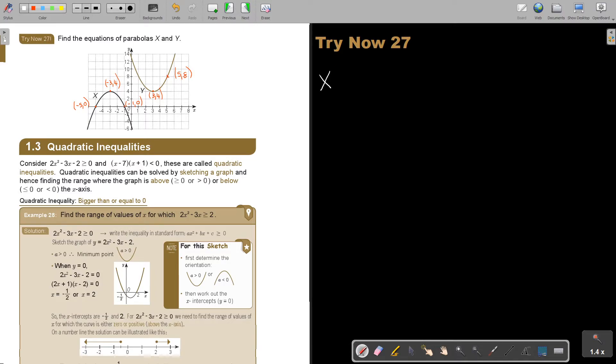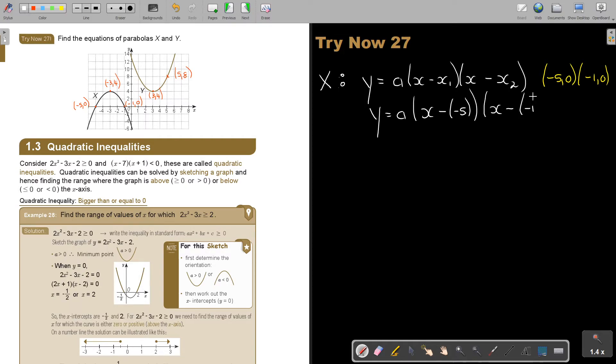Let's start with number x. So I start with the formula y is equal to a, x minus x1, x minus x2. And now I'm going to substitute that points in. My points are negative 5 and 0 and negative 1 and 0. So it's going to be y is equal to a, x minus minus 5, x minus minus 1. So y is equal to a, x plus 5, and x plus 1.